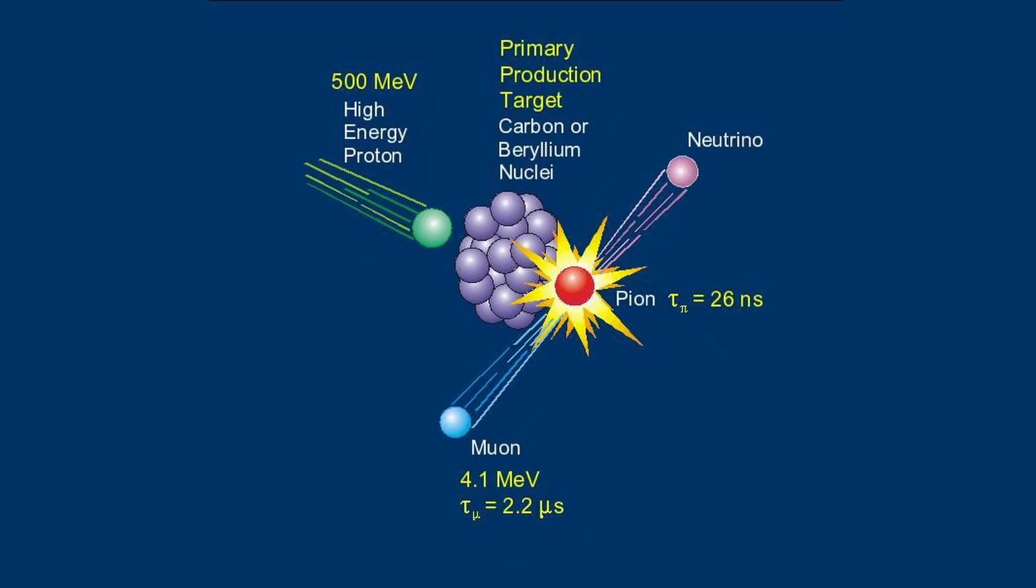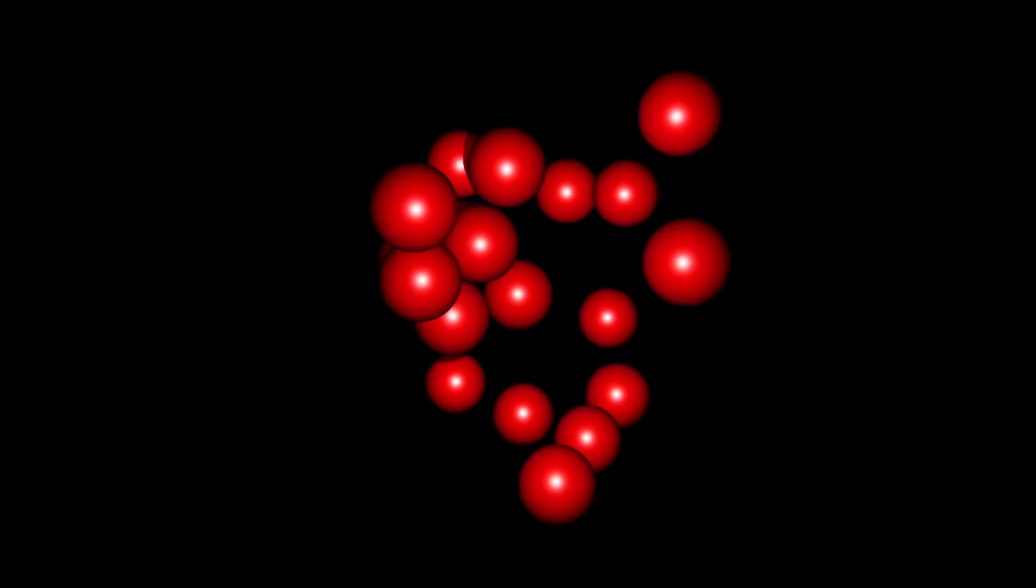The standard model holds that there are protons and neutrons in the nucleus held together by a force called the strong nuclear force. This stops the protons from flying away from each other and binds them into the nucleus.